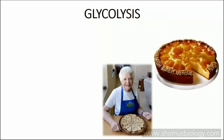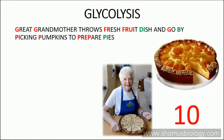For the intermediates, you need to know your great-grandmother, a pie, and the number ten — because glycolysis carries ten separate intermediates. The mnemonic is: 'Great-grandmother throws fresh fruit dish and go by picking pumpkins to prepare pies.' The red-colored first letters represent the intermediates of glycolysis, and the green letters mark the important steps.